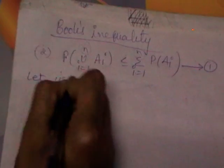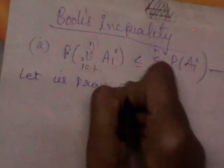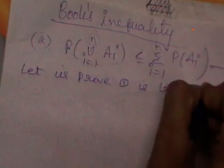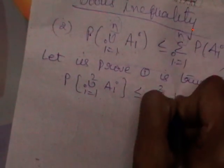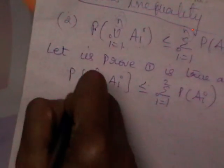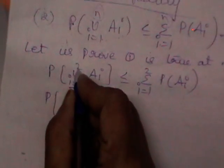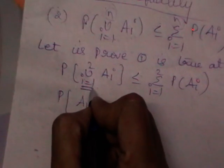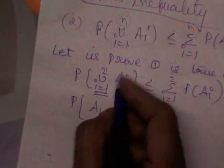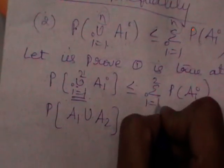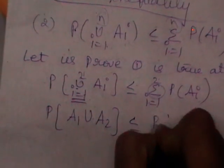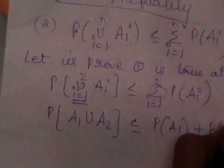Let us prove equation 1 is true at n equals 2. Substituting, we get: probability of union i equals 1 to 2 of A_i, less than or equal to sigma i equals 1 to 2 of P(A_i). Since i runs from 1 to 2 and the left side uses union, we get P(A_1 union A_2) less than or equal to P(A_1) plus P(A_2). This is the statement we need to prove.